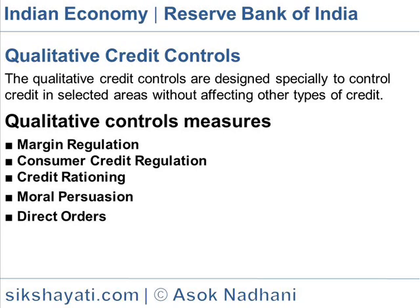Credit Rationing: The central bank may ration credit by specifying credit quotas for each type of business loan. The central bank may fix a ceiling or maximum amount of loans and advances for commercial banks, and may also fix a ceiling for specific categories of loans and advances.